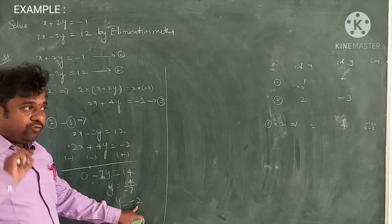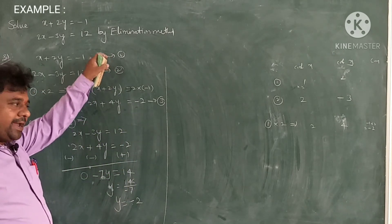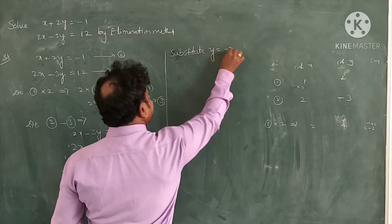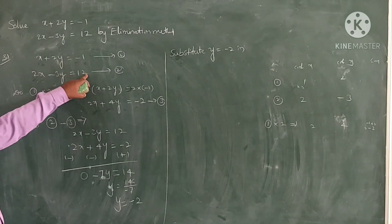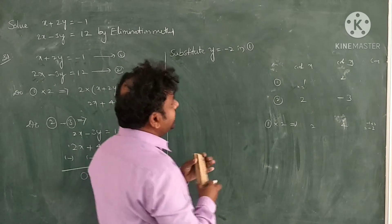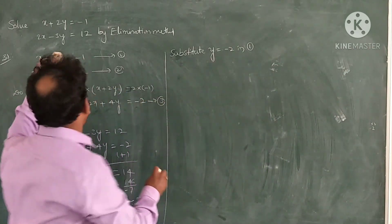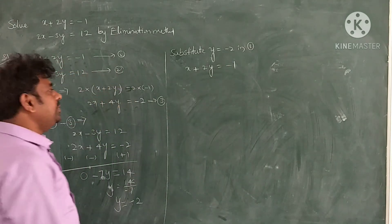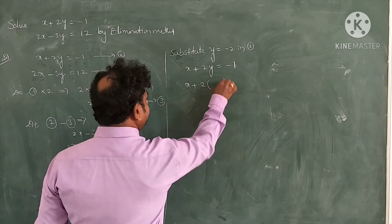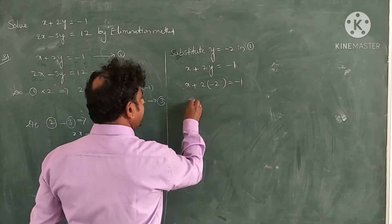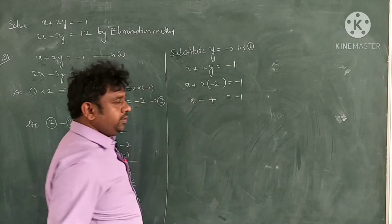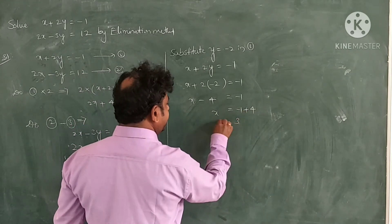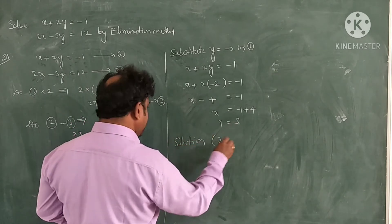Now we have the value of y. To get the value of x, we substitute y equals minus 2 into either equation 1, 2, or 3. Using equation 1: x plus 2y equals minus 1. Substituting y equals minus 2: x plus 2 into minus 2 equals minus 1, so x minus 4 equals minus 1. Transposing minus 4 to the RHS gives plus 4, so x equals minus 1 plus 4 equals 3. Our solution is x equals 3, y equals minus 2, written as (3, minus 2).